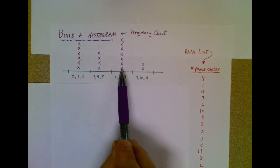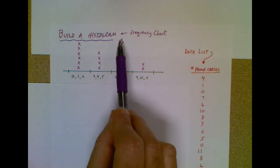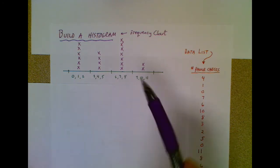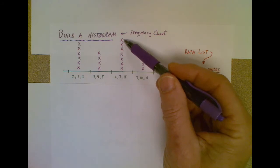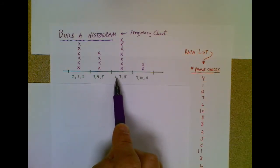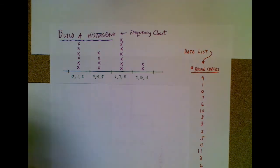And it looks like I have seven people who check their phone either six, or seven, or eight times during the hour. So it's important to know that any one of these people checked either six, or seven, or eight times during that hour.